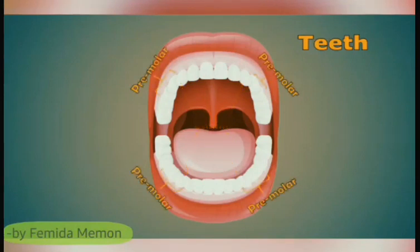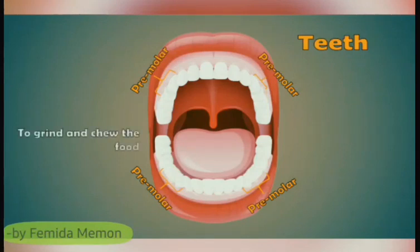Premolar: Behind the canines are two sets of premolars. In all, there are eight premolars, four in each jaw. They are flat and their main function is to grind and chew food.